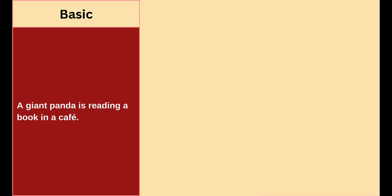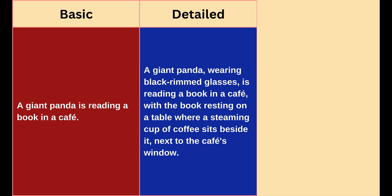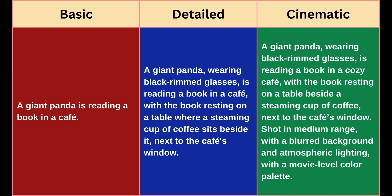Let's take the basic prompt: 'A giant panda is reading a book in a cafe.' To make it more detailed, we can add: 'A giant panda wearing black-rimmed glasses is reading a book in a cafe, with the book resting on a table where a steaming cup of coffee sits beside it, next to the cafe's window.' This makes the scene more specific and vivid. To enhance the cinematic quality, we could specify camera angle and lighting: '...shot in medium range, with a blurred background and atmospheric lighting, with a movie-level color palette.' This added detail will help the AI generate a more textured and visually appealing video, often exceeding expectations.